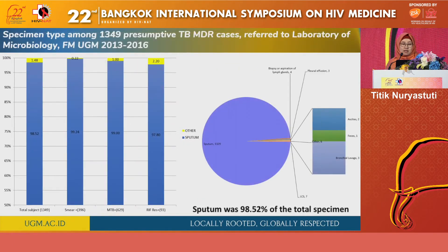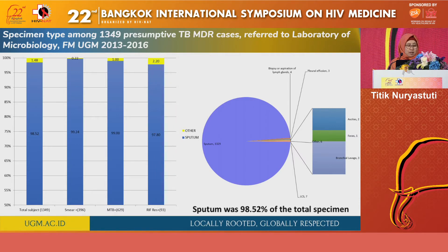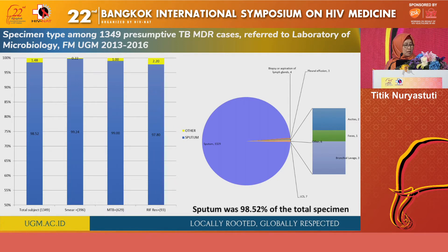Specimen types in this study were mostly sputum — about 1,300 specimens. Non-sputum specimens came from pleural effusion, joint tissue biopsy, lymph node aspiration, feces, ascites, bronchial lavage, and cerebrospinal fluid. Among non-sputum specimens, AFB could not be detected except from lymph node and feces. GeneXpert was only able to detect MTB DNA from lymph node, ascites, feces, and bronchial lavage. Rifampicin-resistant results among non-sputum specimens came from lymph node aspiration.